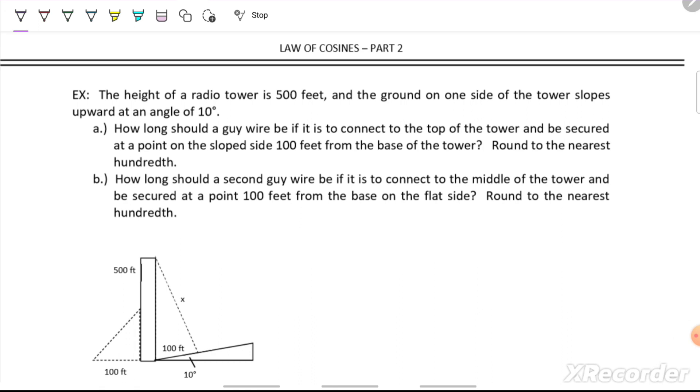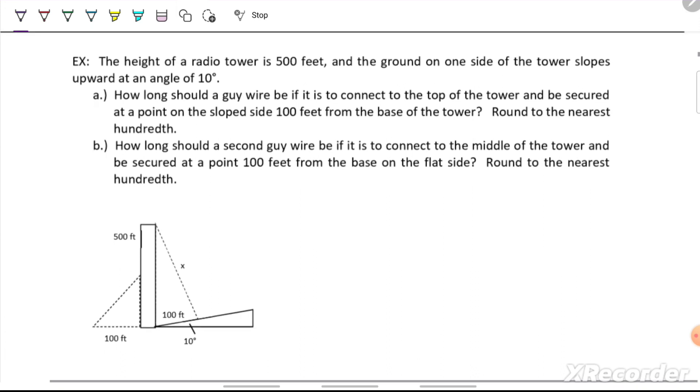The height of a radio tower is 500 feet, and the ground on one side of the tower slopes upward at an angle of 10 degrees. How long should a guy wire be if it's to connect the top of the tower and be secured at a point on the sloped side 100 feet from the base of the tower? Then we'll have a second question asking how long should a guy wire be if it's to connect to the middle of the tower and be secured at a point 100 feet from the base on the flat side? We'll round both our answers to the nearest hundredth.